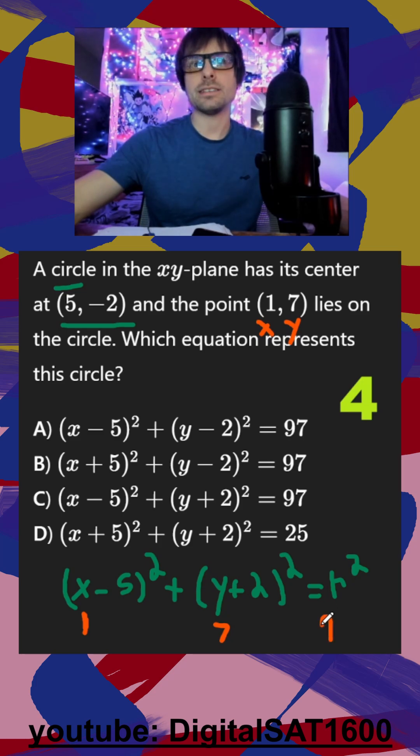My r squared is actually going to be 97. Looking through my answers, I get rid of D because it's 25. Then I look for (x - 5) and (y + 2), and it looks like it's going to be C.